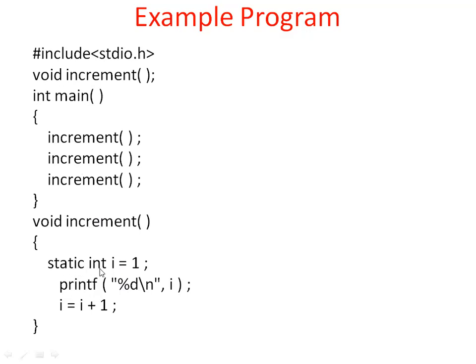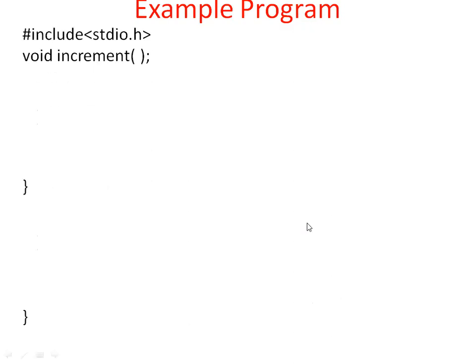So how this static variable behaves inside this function — that means when this function is entered at different times during the execution of the program, the behavior of this static variable and how it exists in memory — that we'll understand now. Let us execute this program and understand what is happening behind the scenes. Program execution begins from main.